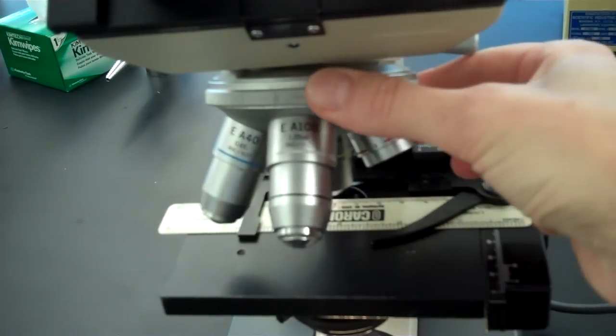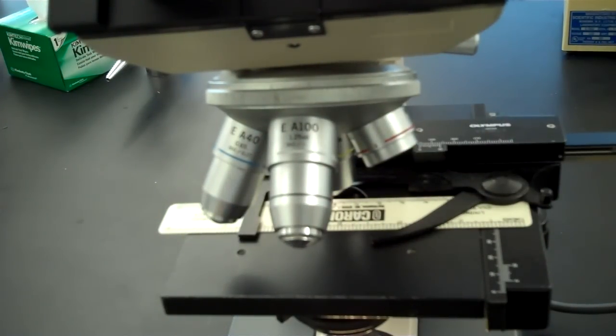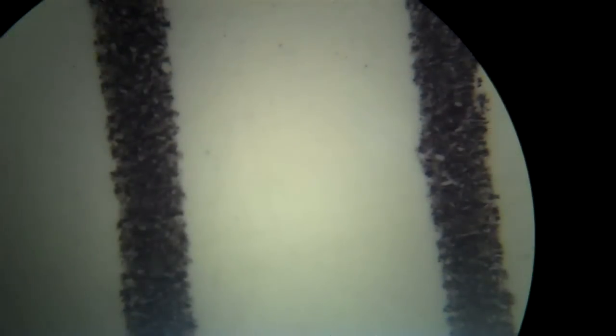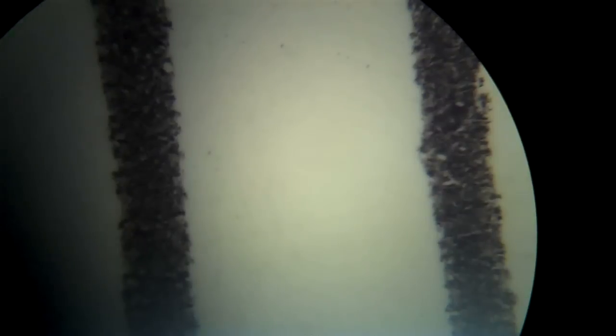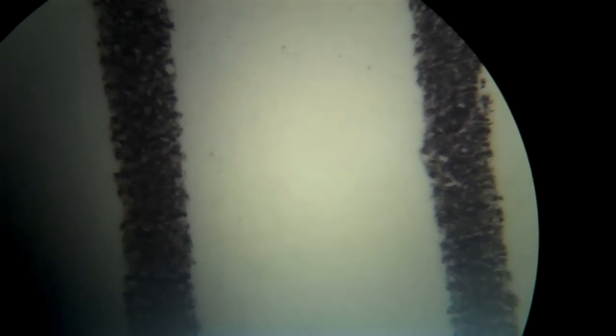turn the carousel to the 10x objective lens, that's the one with the yellow band, and focus on the ruler again. Here you'll see fewer lines, and again, between each pair of lines represents one millimeter.